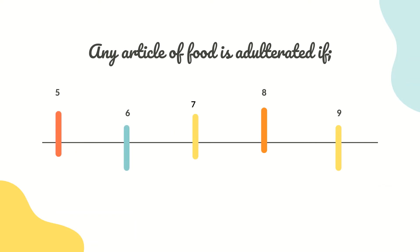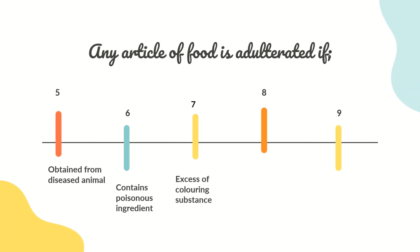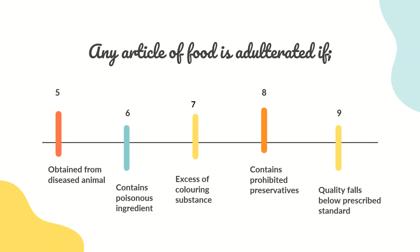Food is also adulterated if it is obtained from any deceased animal, or if it contains any poisonous ingredient. Another condition is if any coloring substance has been added to the product in excess amount, or if it contains any prohibited preservatives harmful to human health. The last condition is if the quality and purity fall below the prescribed standard.